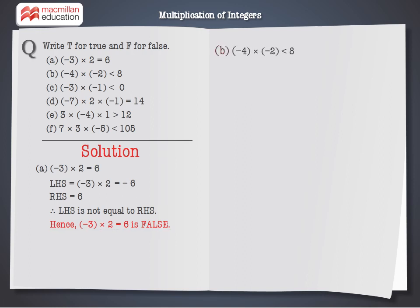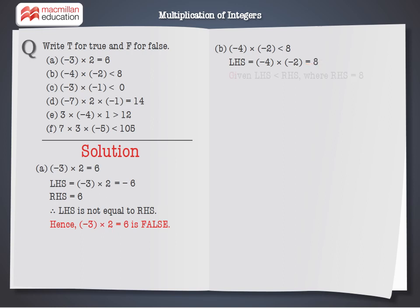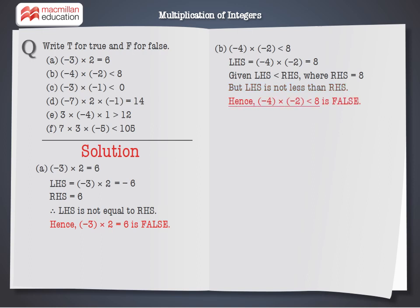B: Minus 4 into minus 2 is less than 8. LHS equals minus 4 into minus 2, which equals 8. Given that LHS is stated to be less than 8, therefore LHS is not less than RHS. Hence, minus 4 into minus 2 is less than 8 is false.